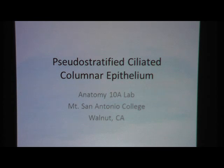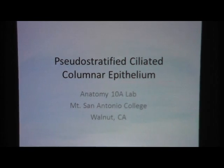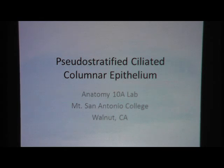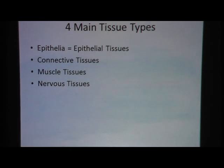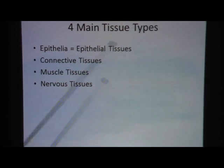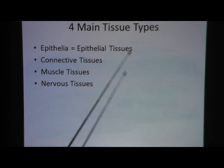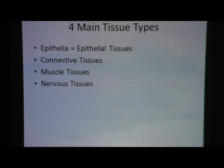Pseudo-stratified ciliated columnar epithelium. These slides are made from an Anatomy 10A lab at Mount San Antonio College. We review the four main tissue types: epithelial tissues, connective tissues, muscle tissues, and nervous tissue. Remember, the entire body can be broken down and fit into one of these tissue types, no matter where you are in the body.